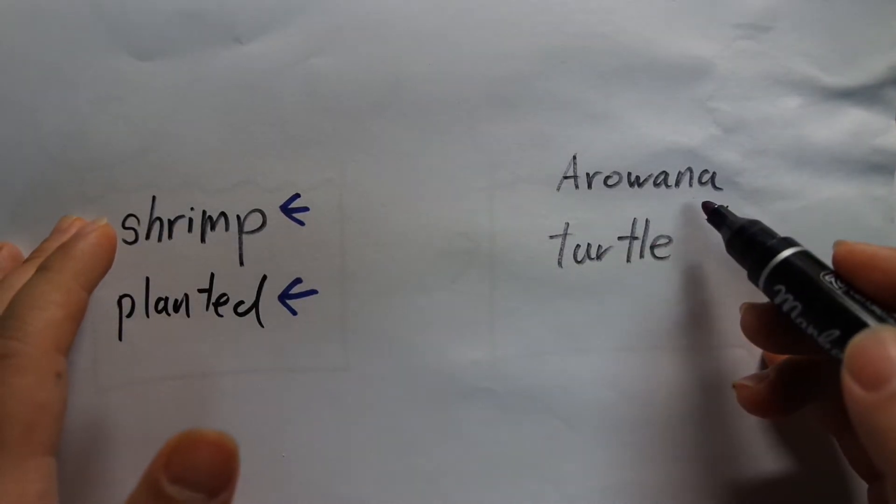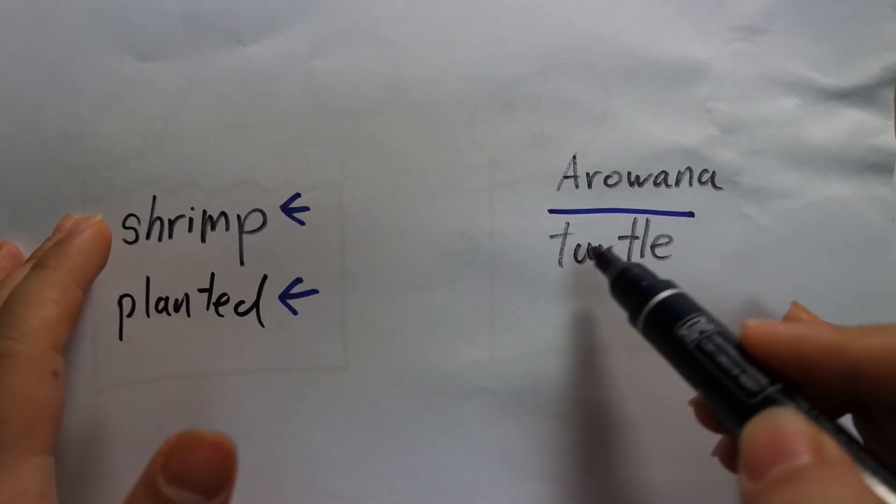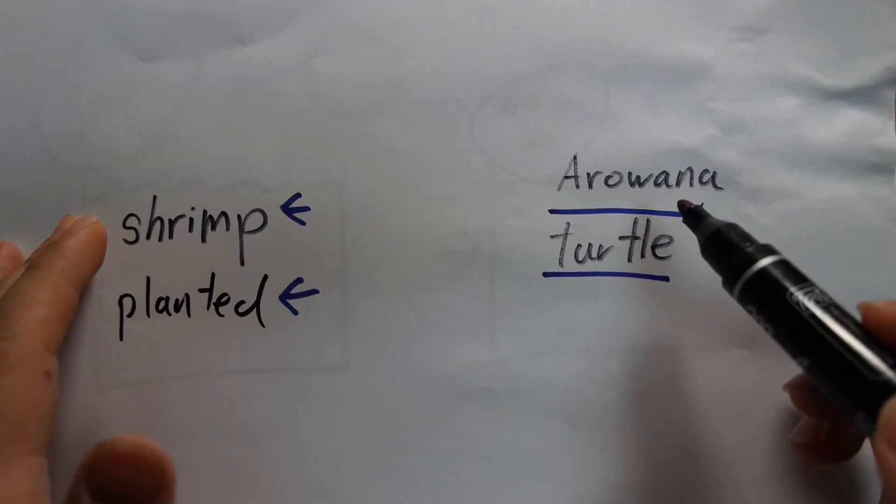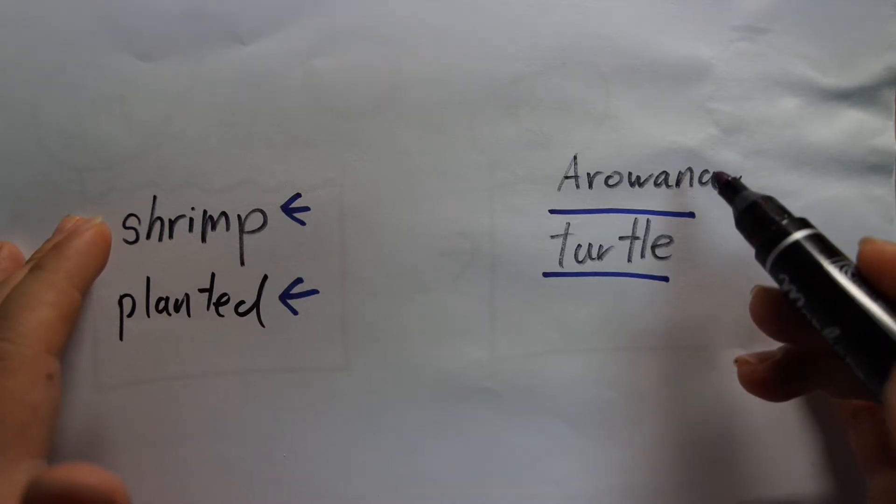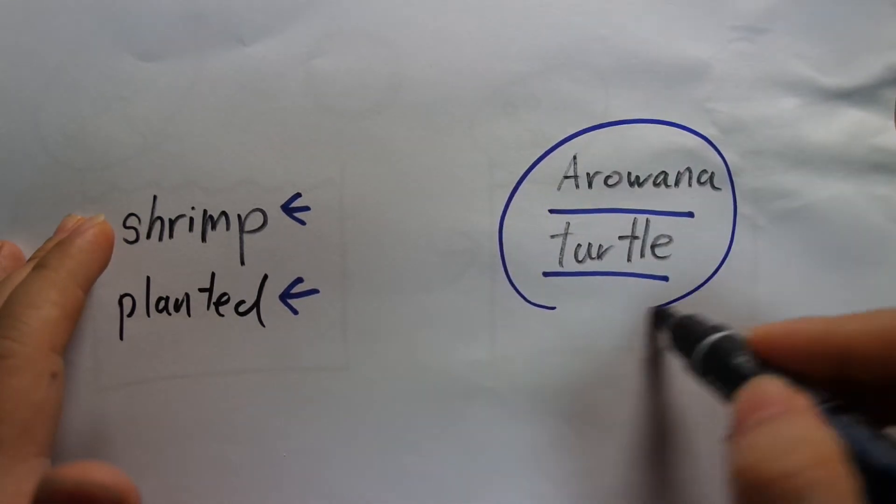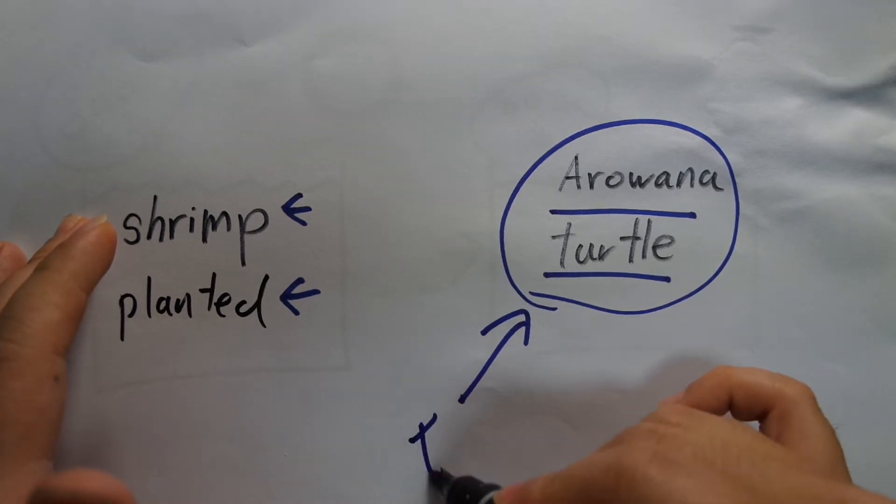Whereas on the other side of the spectrum where you have big fish or big animals like arowanas or turtles, it's pretty much very rare. I've never seen anyone do a no water change arowana tank. I've never seen anyone aside from me doing a no water change turtle tank. So these things are much more difficult to achieve a no water change tank because they require a heavy feeding.